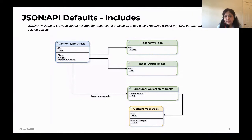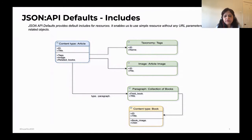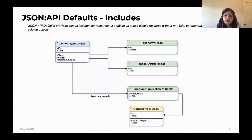If our front-end application tries to access the resource page for a content type article, they will be getting the basic information — the ID and the title — but they will not be getting the information of the relationships. It will indicate that a relationship exists, but the tag name will not be provided and the image URL will not be provided. Our front-end application really needs a flat response where, if they are trying to access one article resource page, they should get all the information related to that particular resource type, without having to iterate and go inside each and every resource separately.